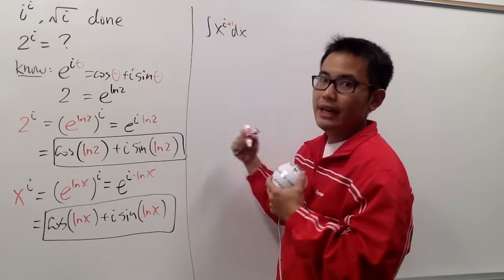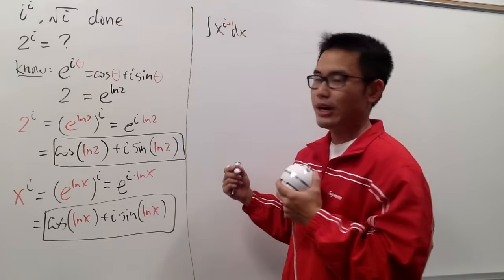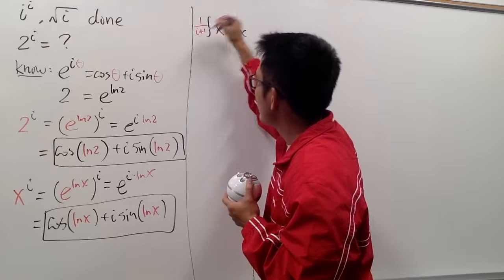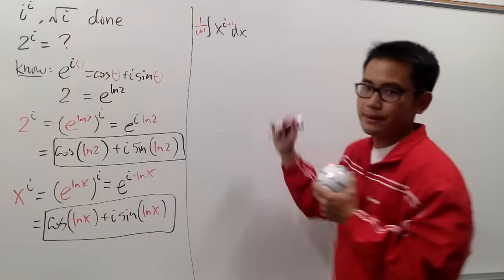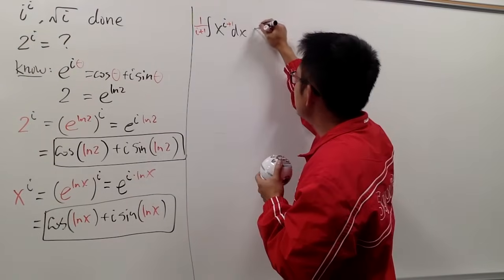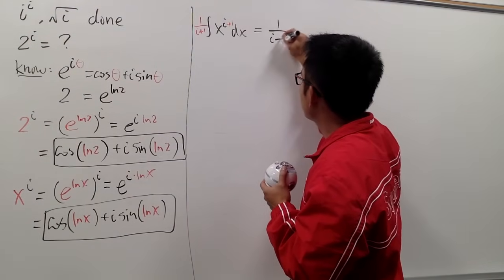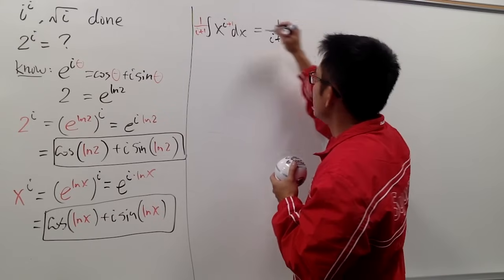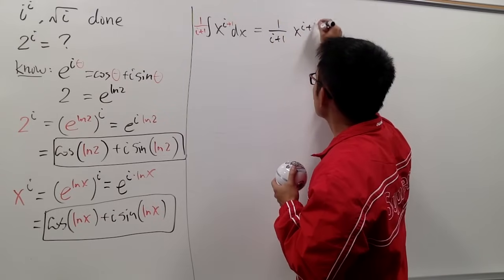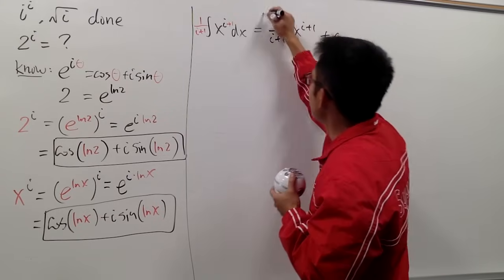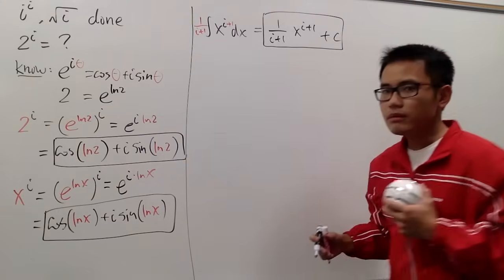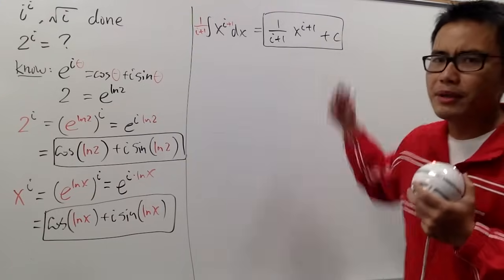We add 1 to it, and then divide by the new exponent. So we'll have 1 over (i plus 1) times x to the (i plus 1) power. So technically, I'm done — but what does this even mean? Is there anything better we can do?